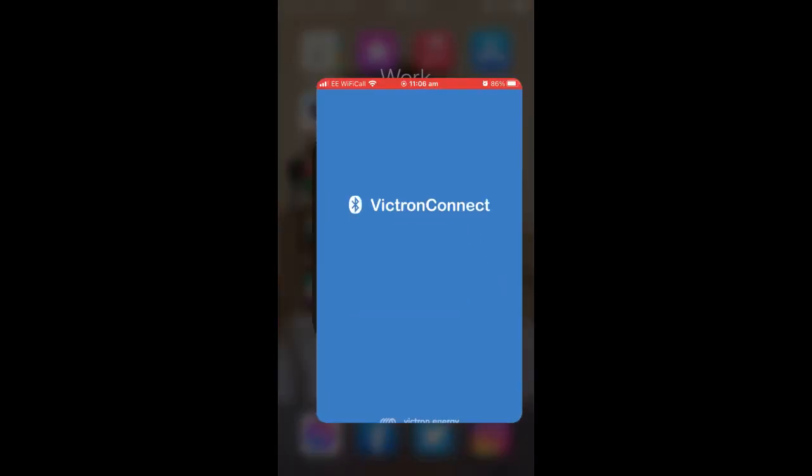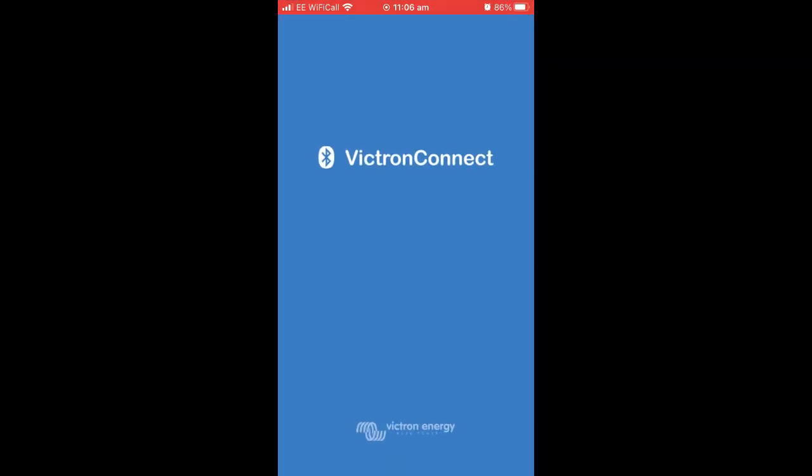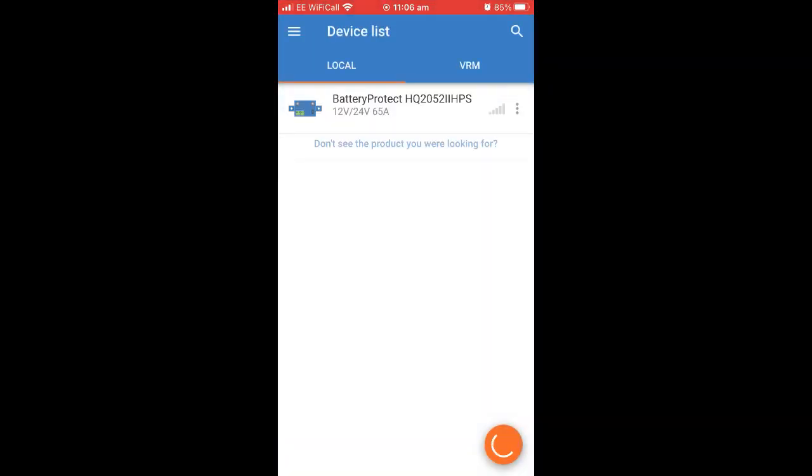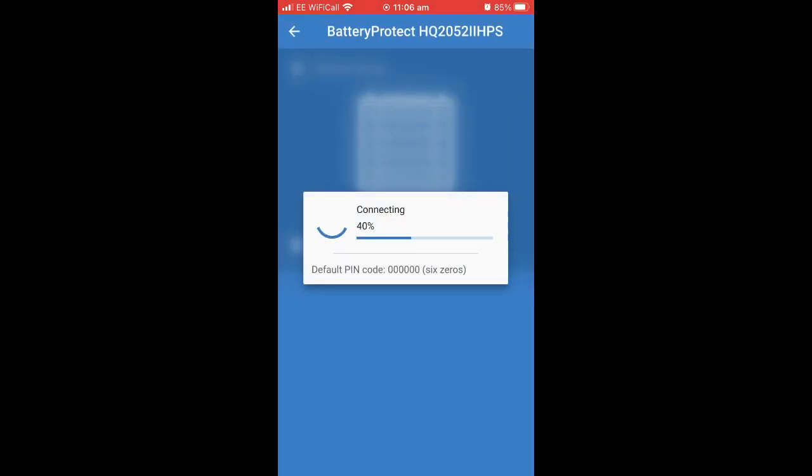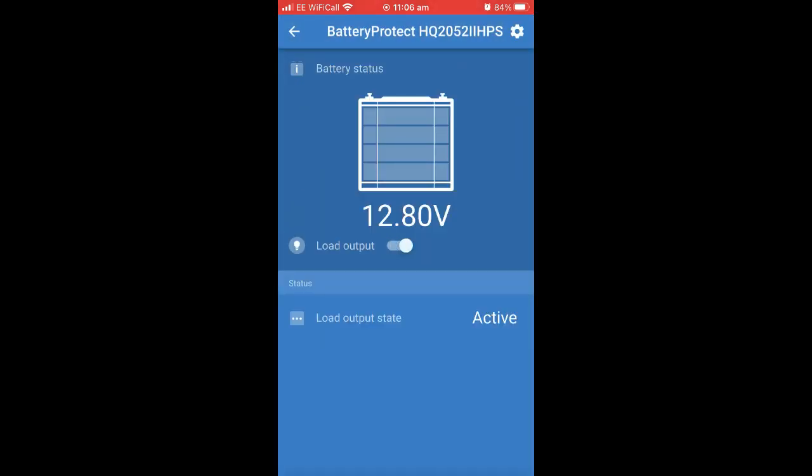So here you can see the Victron Connect app which we will open. When you first open the app you will find the Victron smart battery protect or any other Victron products you have. Select the battery protect. When you first connect to the system you may be asked to install a firmware update but for the purpose of this video we've made sure ours is up to date.